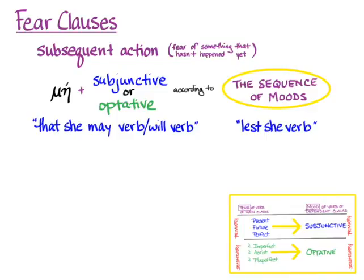The negative for a fear clause is οὐ. So if you're afraid that something won't happen, you'll say μή οὐ, plus the subjunctive or the optative according to the sequence of moods.